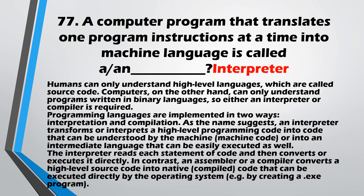Question No. 77: A computer program that translates one program instruction at a time into machine language is called an Interpreter. An interpreter also converts high-level language into lower-level language, but it does so line-by-line — one instruction at a time — unlike a compiler which converts the complete program at once.